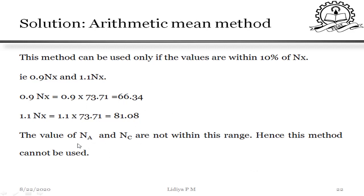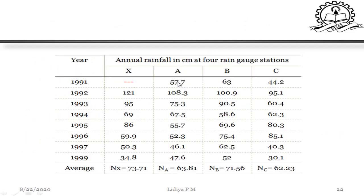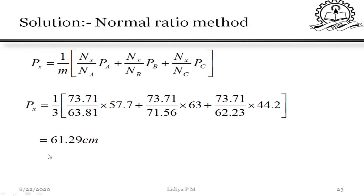Since NA and NC fall outside the 10 percent limit, the arithmetic mean method cannot be used. We must use the normal ratio method. With 3 surrounding stations, substituting NX, NA, NB, NC and the corresponding precipitation values PA, PB, PC into the normal ratio formula, we get the missing precipitation data as 61.29 cm.